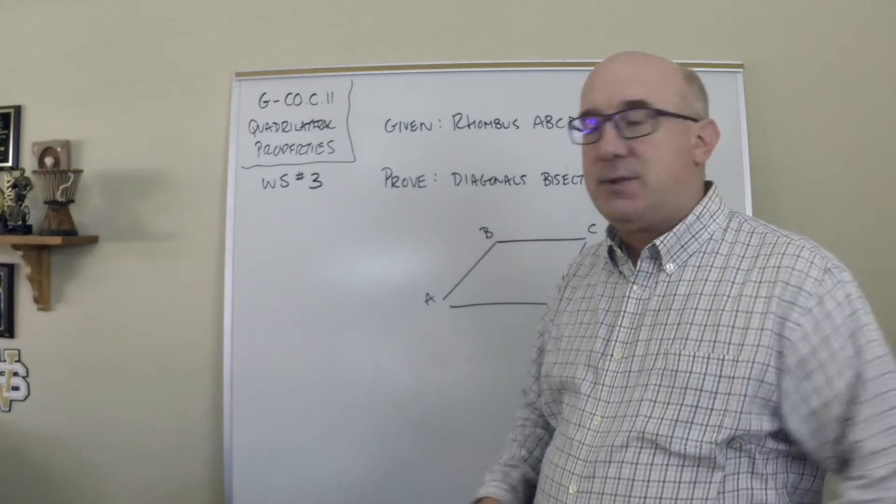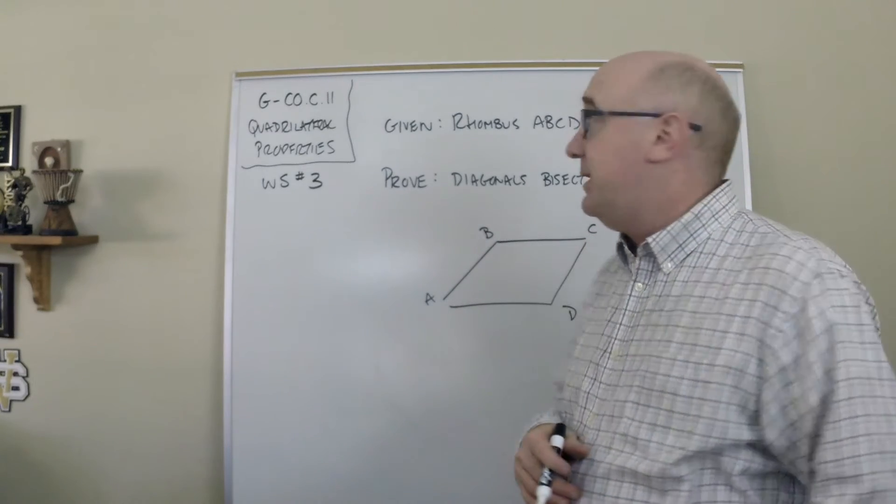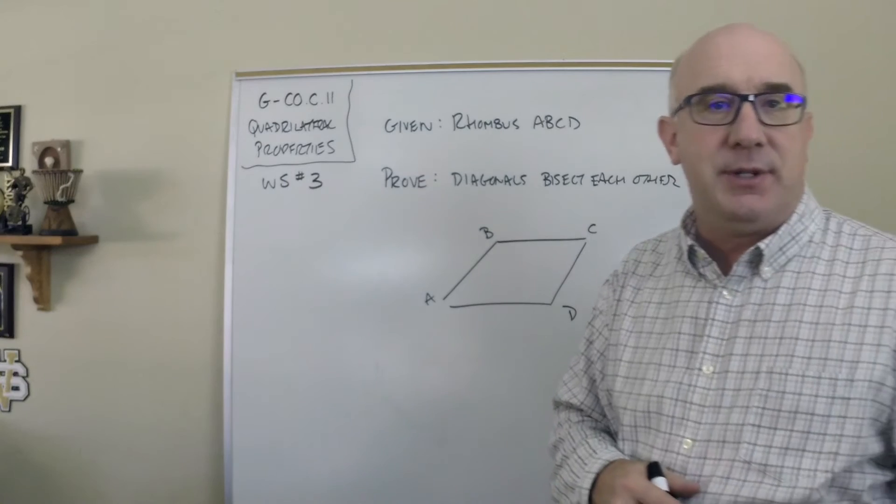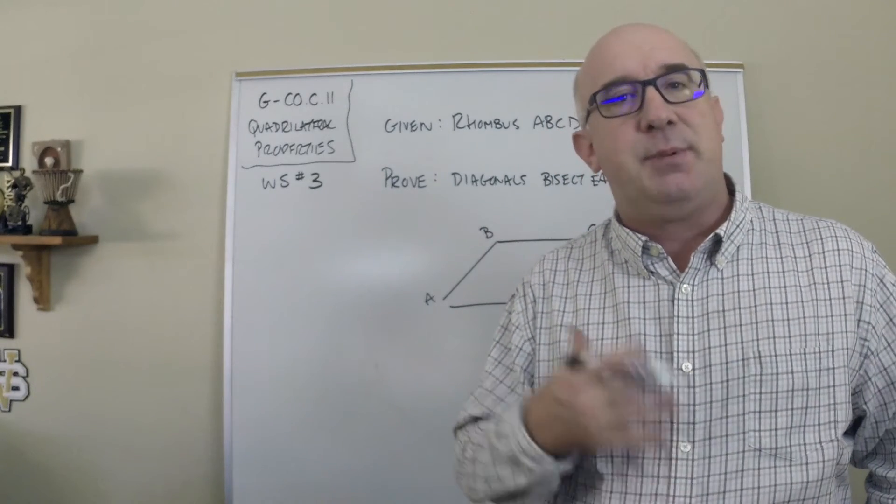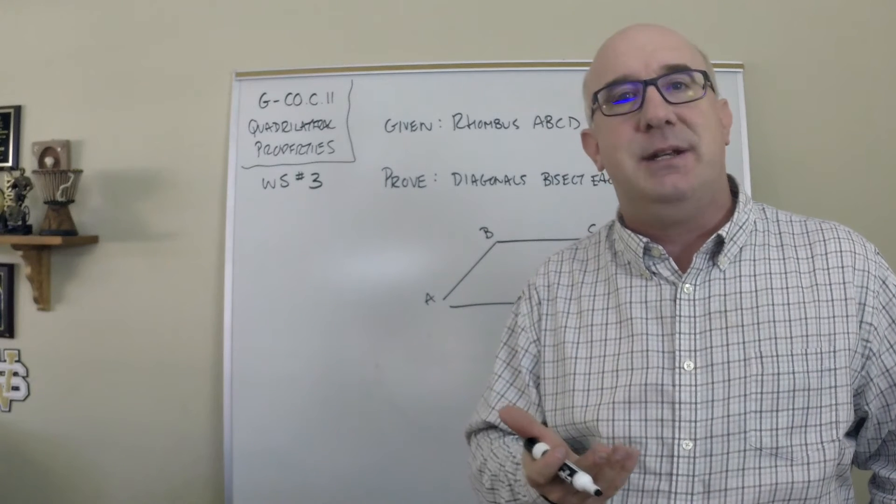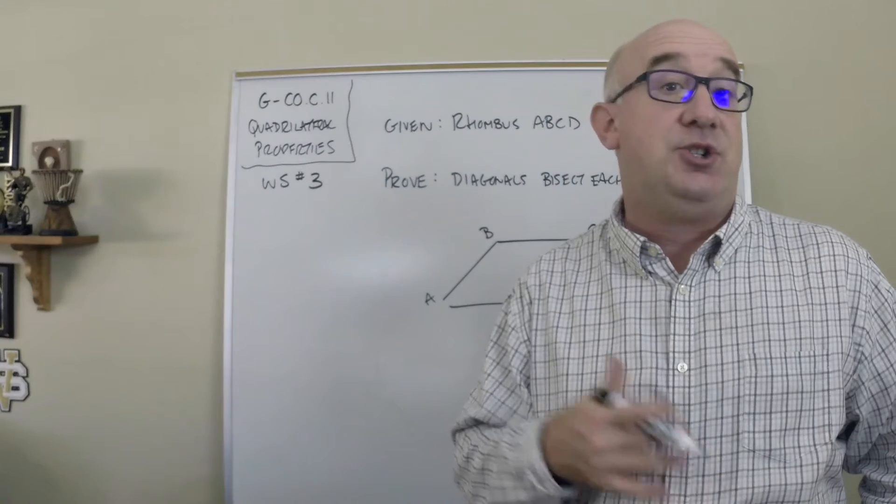Alright, this last worksheet, number three, in this area of GCO C-11 about quadrilaterals and their properties, asks you to attempt some explanation to prove why certain properties exist and not just use them or know them.